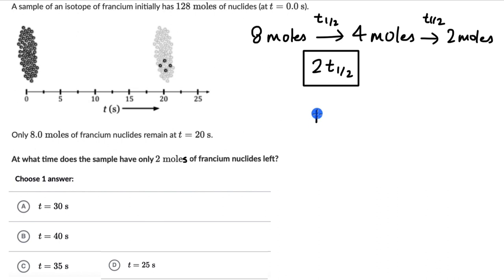So one relation that we know is that the number of nucleides that remain is equal to the initial number of nuclei divided by 2 to the power n. And here n is the number of half lives that are spent.